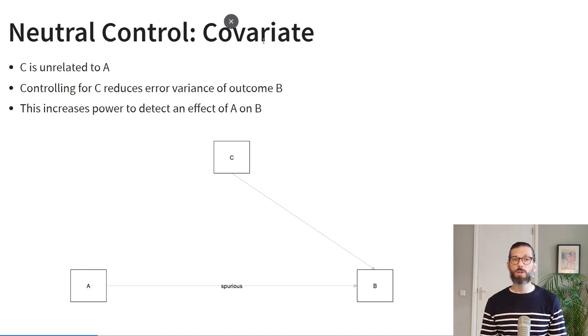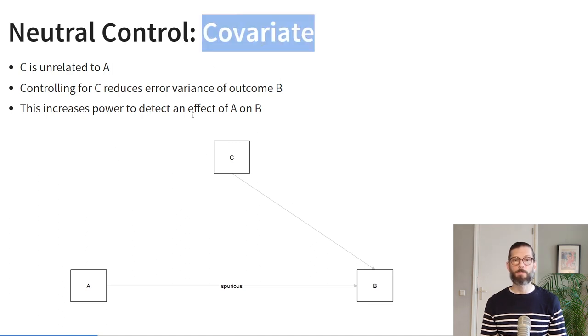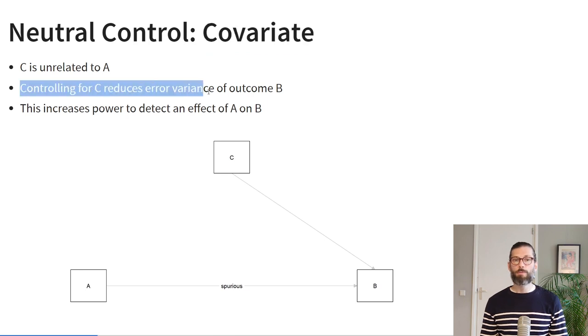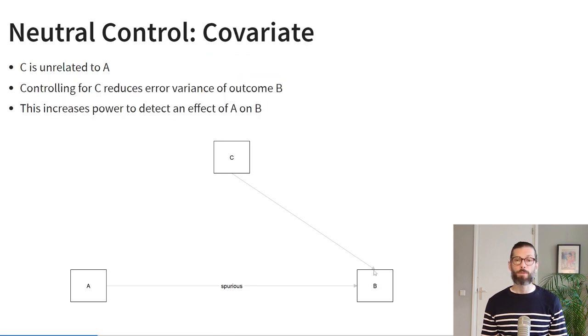In some cases it's neither good nor bad to control for C — we can call this a neutral covariate. In this scenario, C is not related to A but it is a predictor of B. Controlling for C will reduce the error variance of B, which increases our power to detect an effect of A, but does nothing else. So it's beneficial for power but makes no difference from a causal inference point of view.